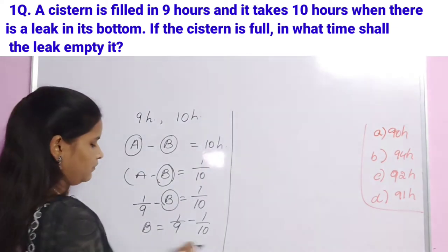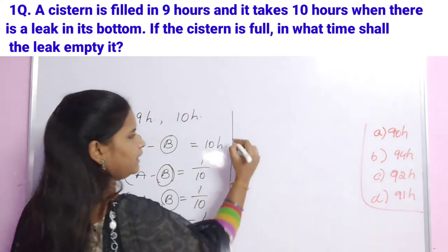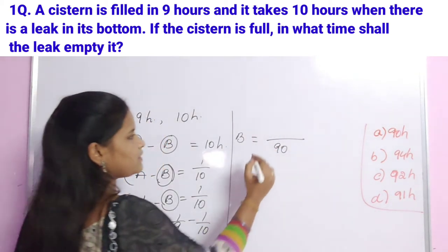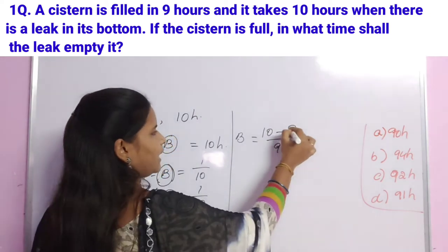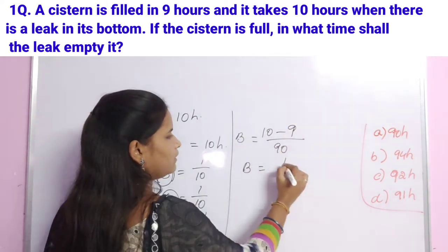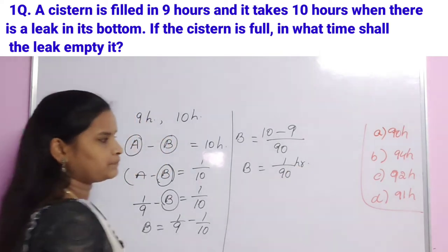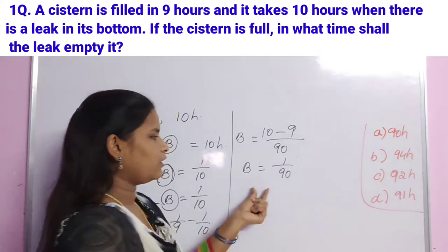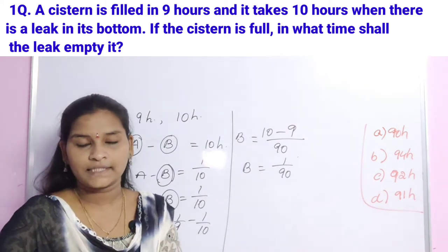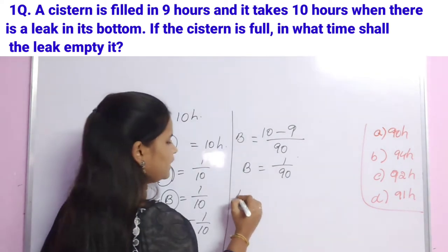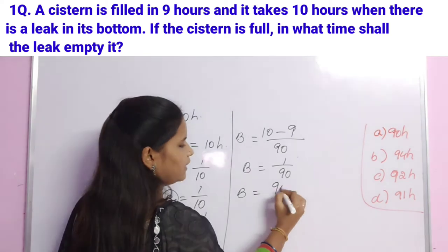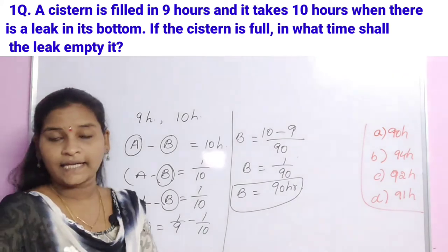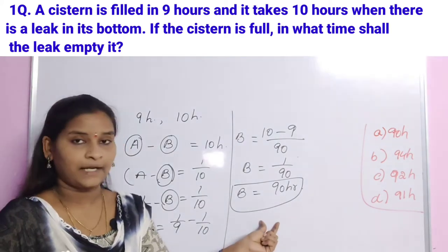Simplify: LCM of 9 and 10 is 90. So 10 minus 9 over 90 gives B equal to 1/90. In 1 hour the leak empties 1/90th of the tank. Therefore the total time to empty the full cistern is 90 hours.